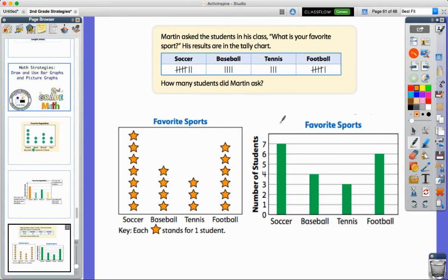So the question from the book asks us how many people did he talk to? How many people did he ask? I could start here with my seven, eight, nine, ten, eleven, twelve, thirteen, fourteen, fifteen, sixteen, seventeen, eighteen, nineteen, twenty. I can see that we asked twenty students.